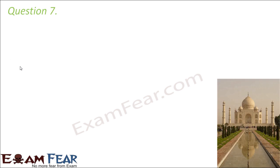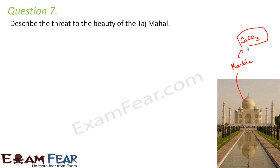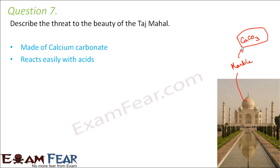Question number 7: Describe the threat to the beauty of the Taj Mahal. The Taj Mahal is made up of marble, and marble is nothing but calcium carbonate. These types of rocks are very easily susceptible to corrosion by acid rain, because calcium carbonate reacts easily with acids.